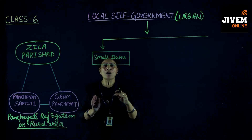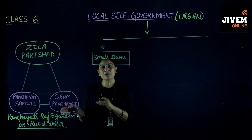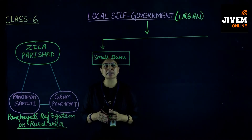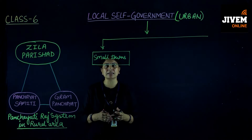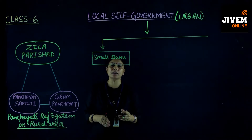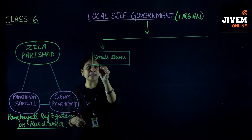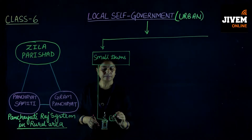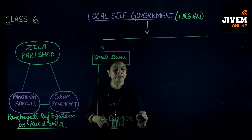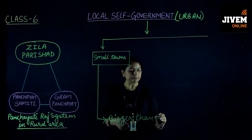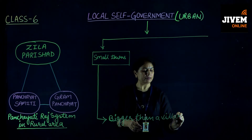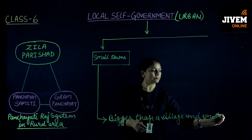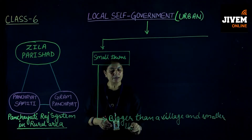Small towns are areas that are transitioning from villages towards cities. Village facilities are being replaced by city facilities, population is increasing, needs and problems are increasing, and the area is beginning to take the shape of a city. In other words, we can say: bigger than a village and smaller than a city.